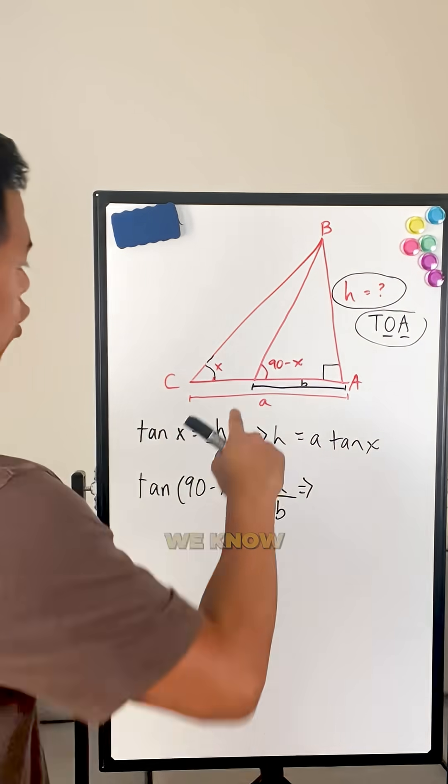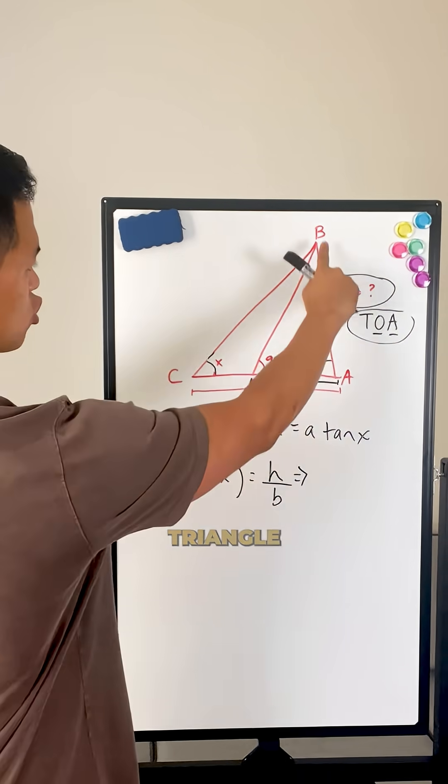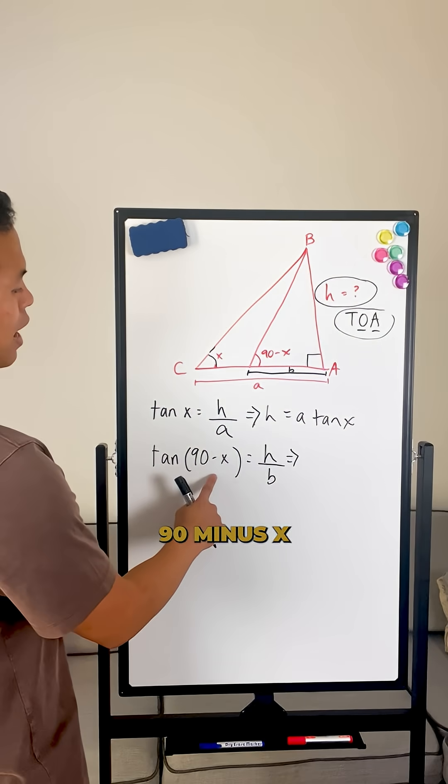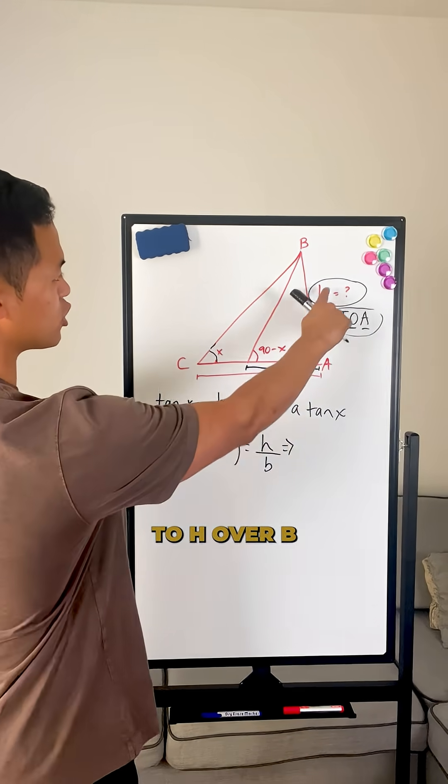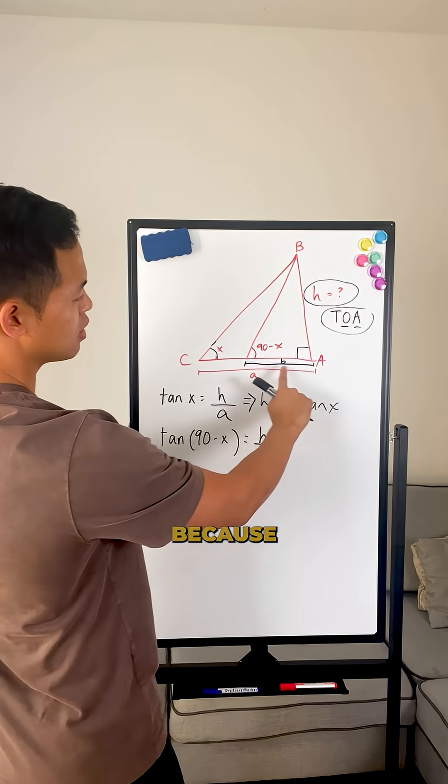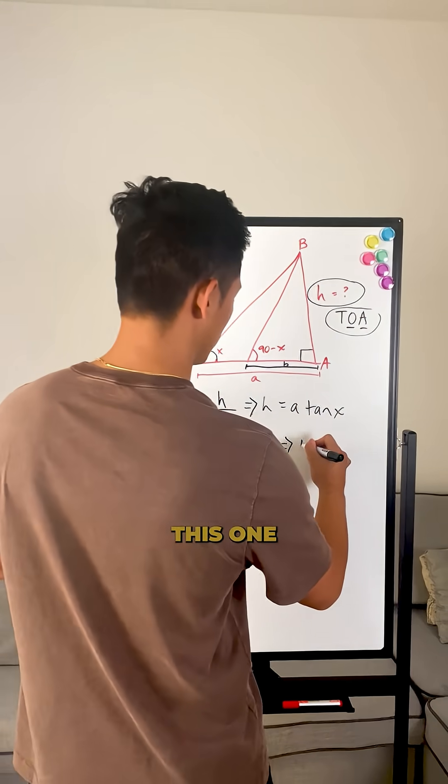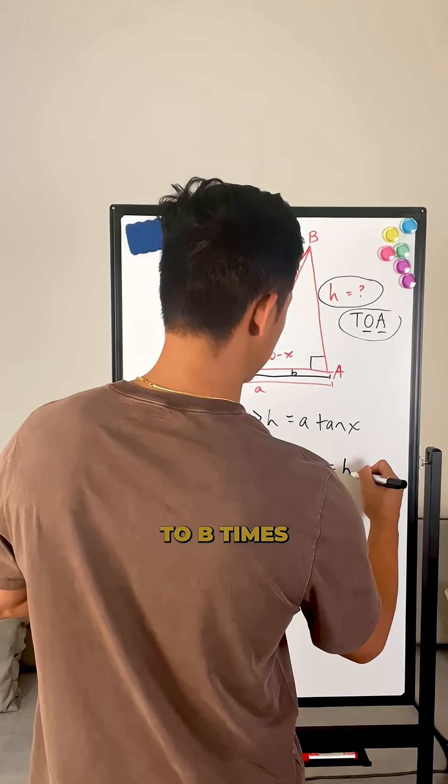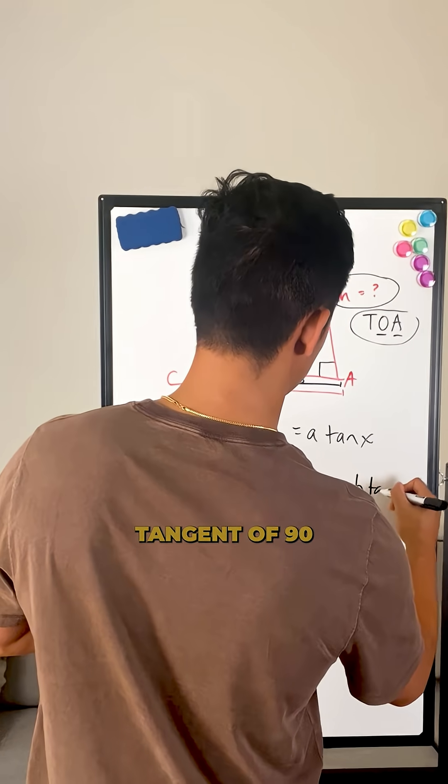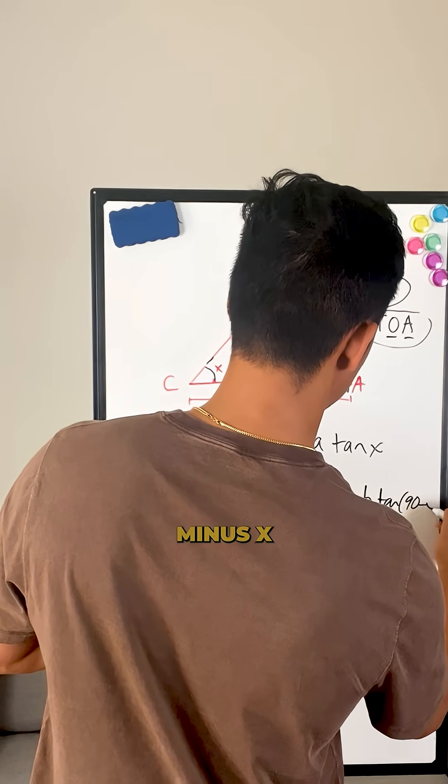For the second one, we know for this small triangle right here, tangent of 90 minus X equals H over B, because this is the adjacent of the small triangle. Now we know that for this one, H equals B times tangent of 90 minus X.